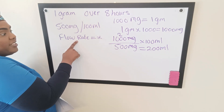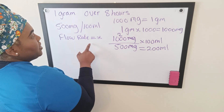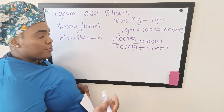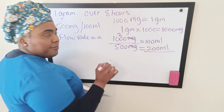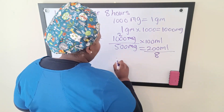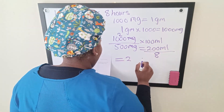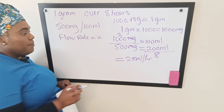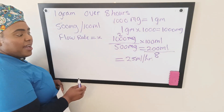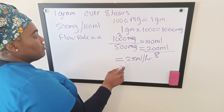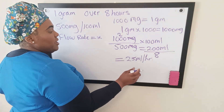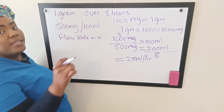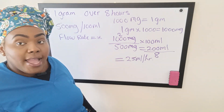Now we calculate our flow rate. We have eight hours to give 200 mils, so we take the amount and divide it by time: 200 mils divided by 8 gives us 25 mils per hour. You program your pump to give the patient 25 mils every hour for eight hours for them to receive the one gram of medication as ordered.